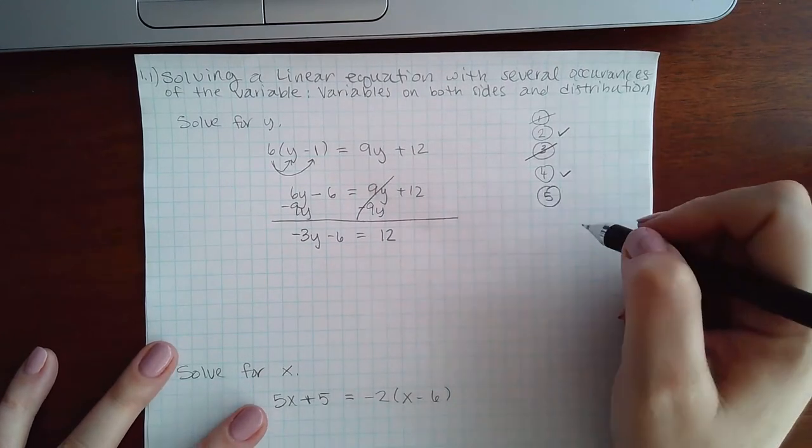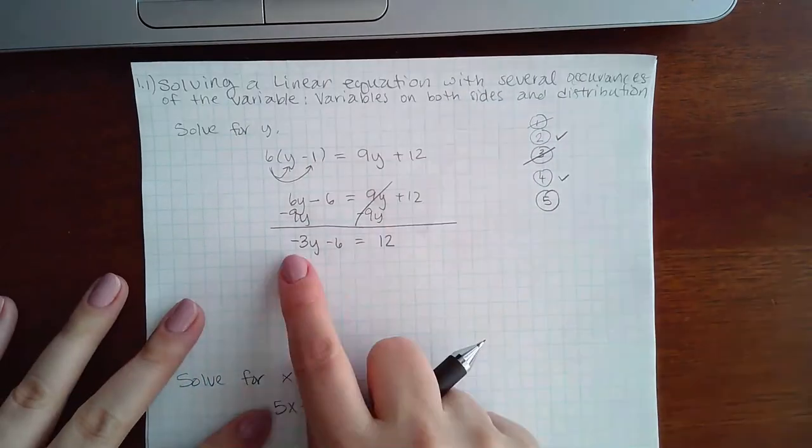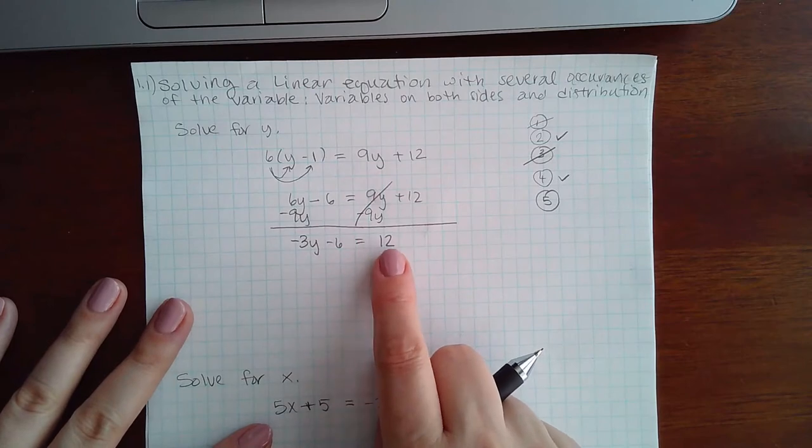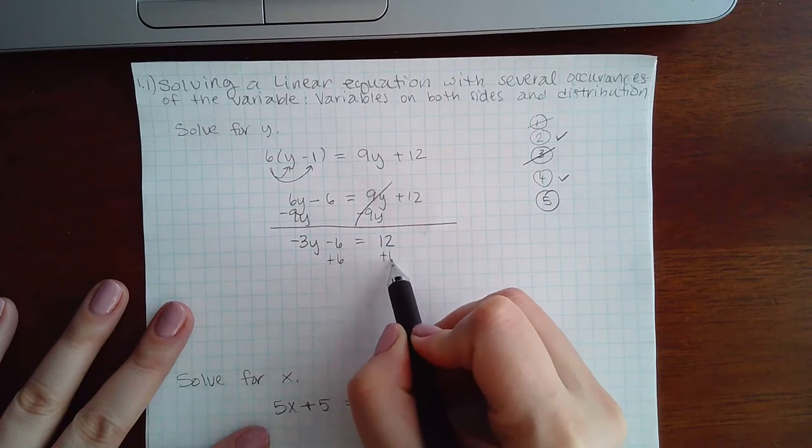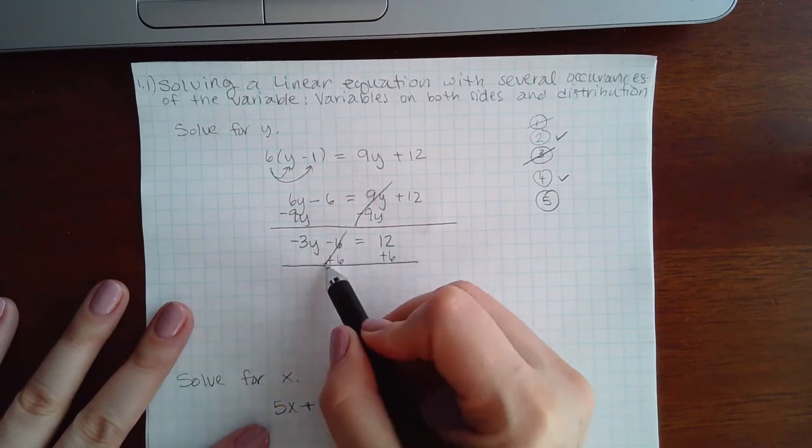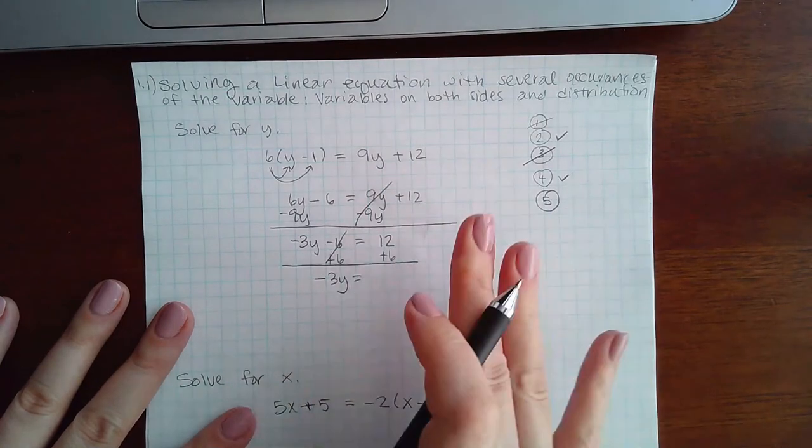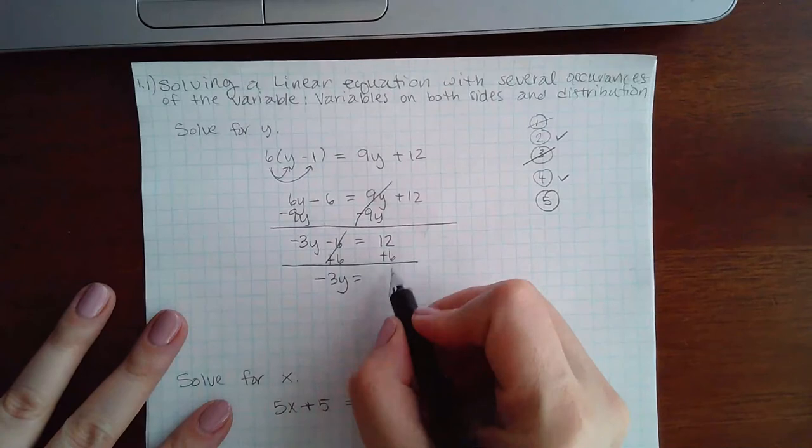Step 5 is to move the constant terms to the other side. So since my variables are on the left, that means my constants should all be on the right-hand side, which means this guy is going to move, so I'm going to add 6 to move it. Always do the opposite sign. Whenever you're moving a whole term over, you need to use the opposite sign.